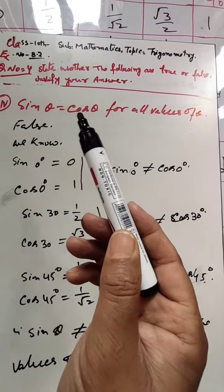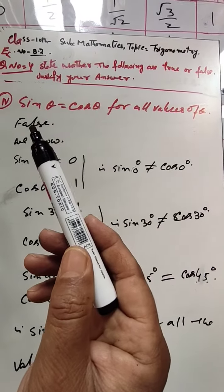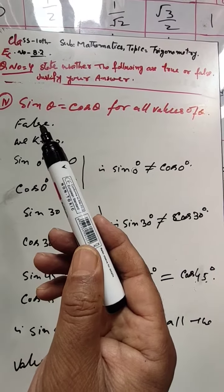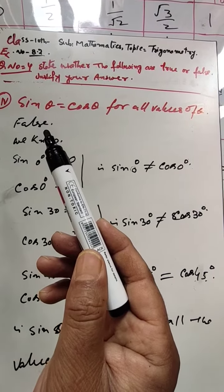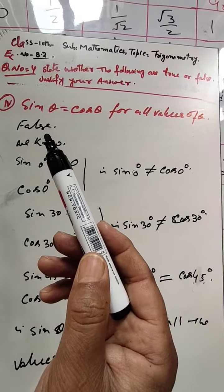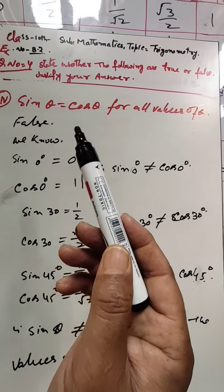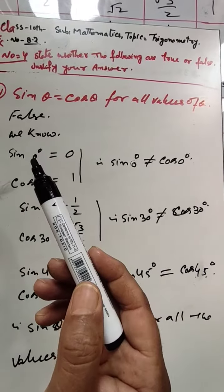If sine of θ equals cos of θ, we know that this is incorrect — it is not true for all values. It is only true for 45 degrees, where sine 45 is equal to cos 45.